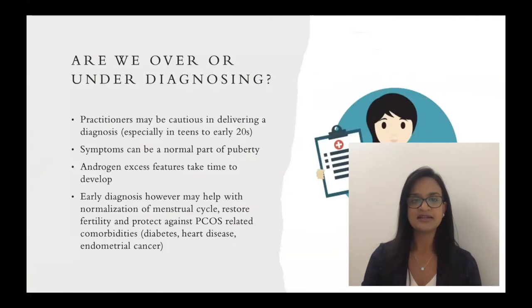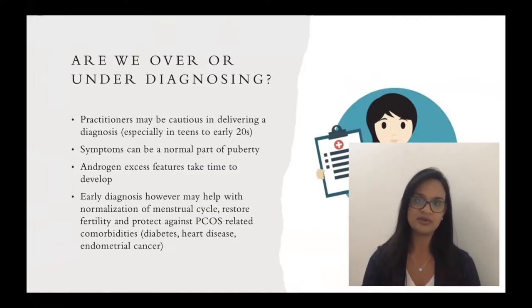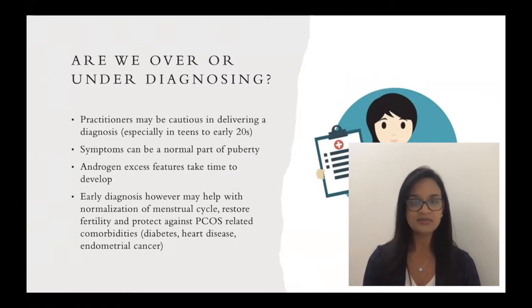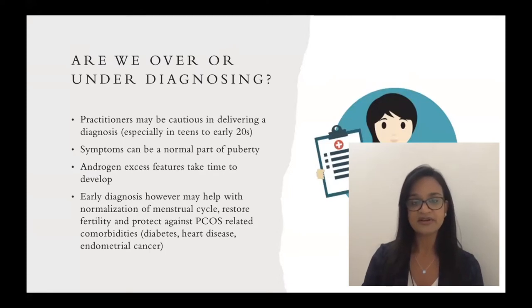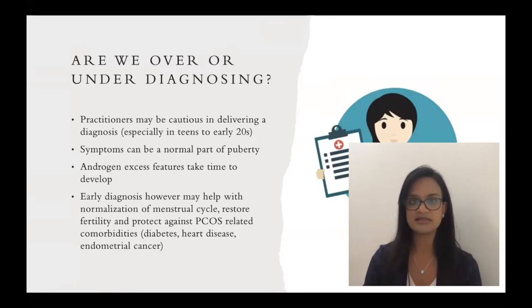Are we over or under diagnosing PCOS? With the diet we're living in America, there are many variables causing obesity, hormonal changes, thyroid dysfunctions, and infertility. We're cautious in delivering this diagnosis, especially in teens to early 20s, because some symptoms are a normal part of puberty with irregular cycles. Androgen excess can actually take time to develop. Early diagnosis, however, can help with normalization of menstrual cycles, restoring fertility, and protecting against PCOS-related comorbidities such as diabetes, heart disease, and endometrial cancer.